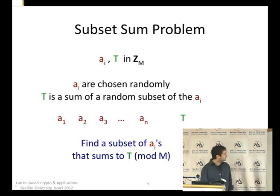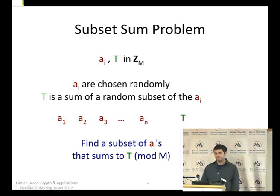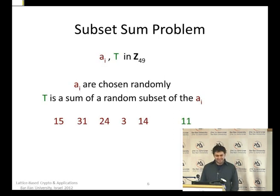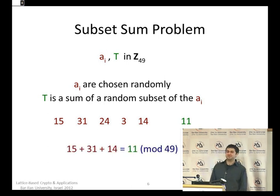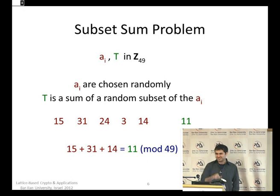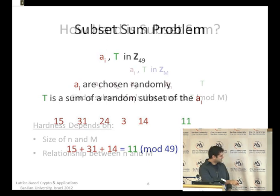Here's the subset sum problem. You have your a_i's which are random in Z_M, and T is the sum of a random subset of the a_i's. The goal is to find a subset of the a_i's that sums to T mod M. How hard is it? It depends on N and M. If M is much bigger than N — like 2 to the N squared — there's the LLL algorithm that breaks subset sum. If M is about 2 to the log-squared N, there's also something that breaks it. So if you're basing your cryptography on subset sum, you want to work in the regime where the best algorithms are 2 to the order N.